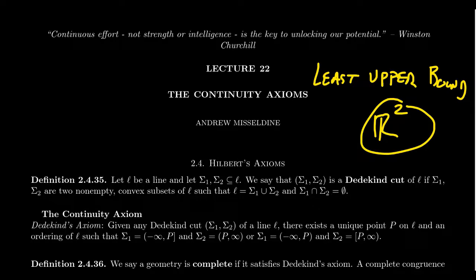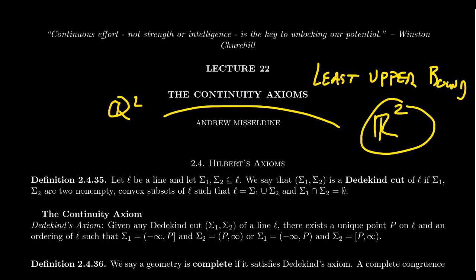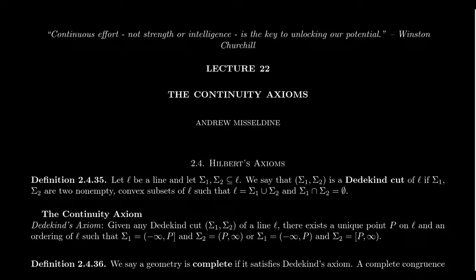The completeness axiom is a necessary condition that we need to differentiate between an affine congruence geometry like Q². Q² is a congruence geometry and an affine geometry because it satisfies the Euclidean parallel postulate. What separates these two geometries is that the real plane — that is the Euclidean plane — is complete, and the rational plane is not. The least upper bound property is sometimes referred to as the Dedekind axiom of completeness or continuity, because the model of the real numbers that best exemplifies the least upper bound property is the model of Dedekind cuts on the rational numbers.